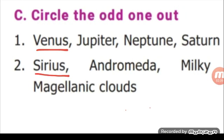Next, circle the odd one out. First question: Venus, Jupiter, Neptune, Saturn. Venus is the odd one. It is the inner planet. The other three - Jupiter, Neptune, Saturn - are outer planets.